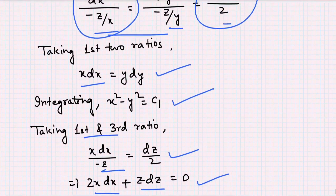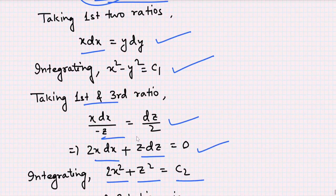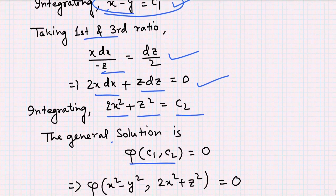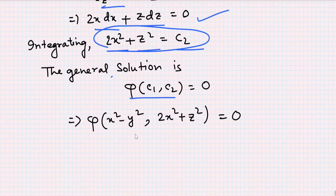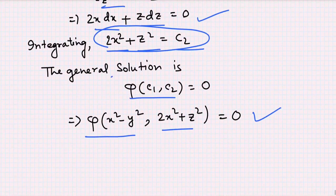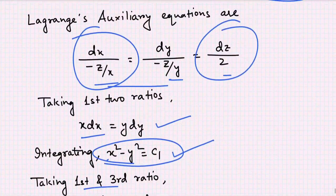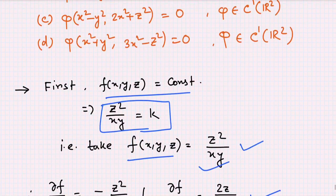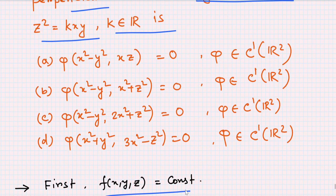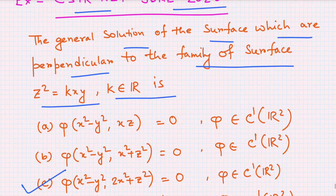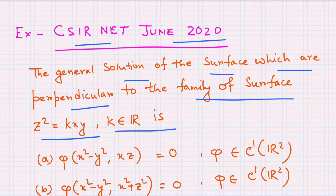Therefore the general solution is φ(c₁, c₂) = 0, where φ is an arbitrary function. So the answer is φ(x² − y², 2x² + z²) = 0. This corresponds to option C, which is the correct answer for this CSIR NET June 2020 problem. If the video is helpful, please give a like, share with your friends, and subscribe to the channel. Thank you, see you in the next video.